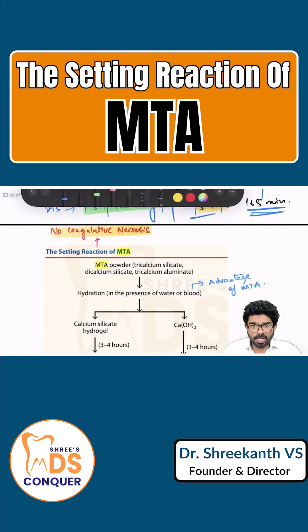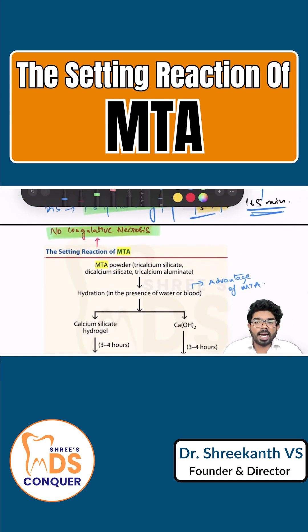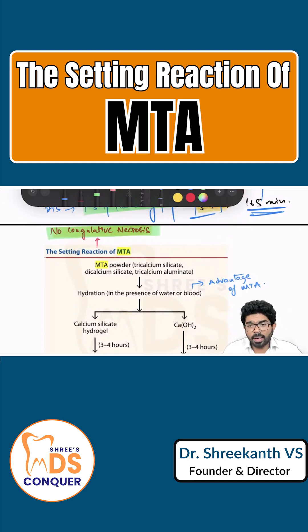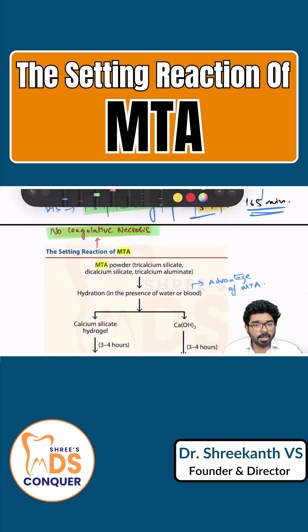When talking about calcium hydroxide, the biggest difference between calcium hydroxide and MTA is that there is no coagulative necrosis associated with MTA, whereas coagulative necrosis can be seen with calcium hydroxide as a response whenever it is placed on the pulp.